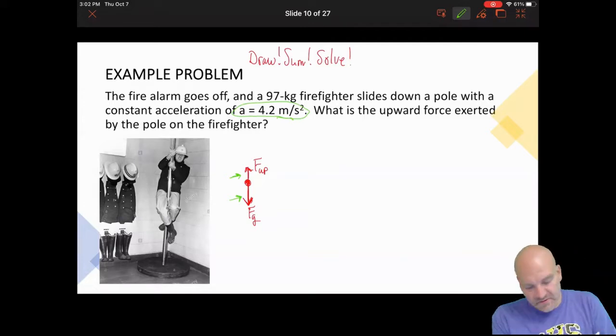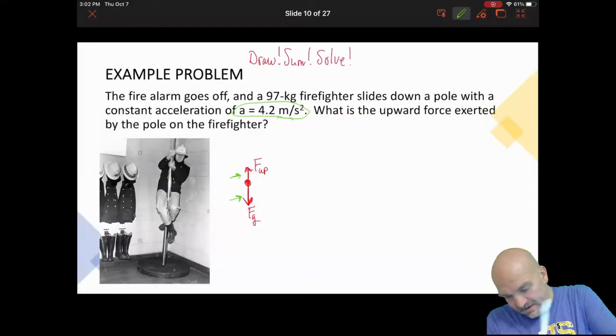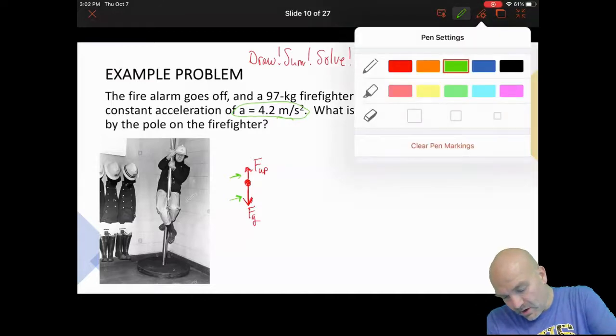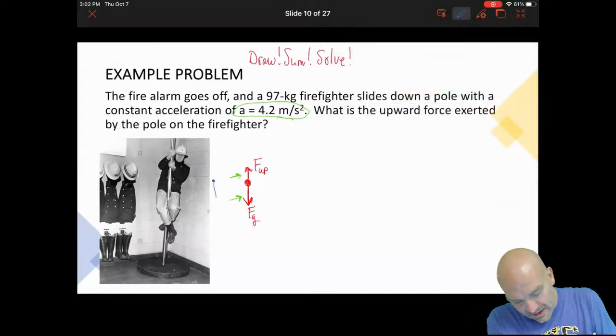That up force is taking away some of the effect of gravity, but yet we're still accelerating down at 4.2 meters per second squared. So what I'm going to do is I'm going to draw my acceleration vector away from my free body diagram.